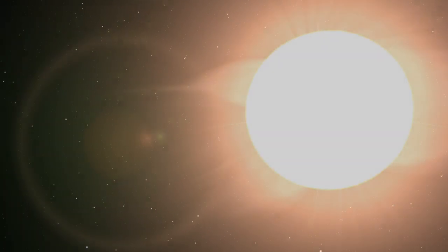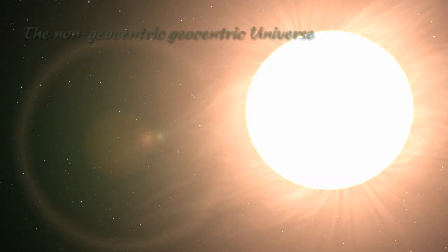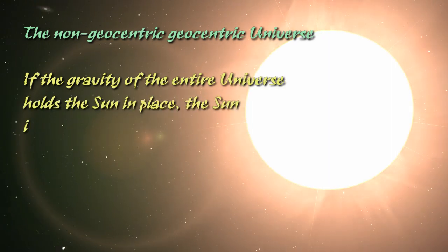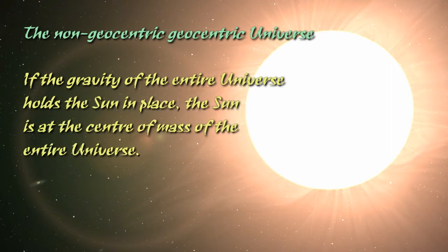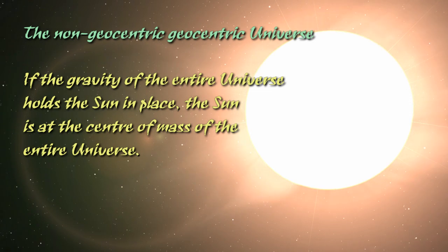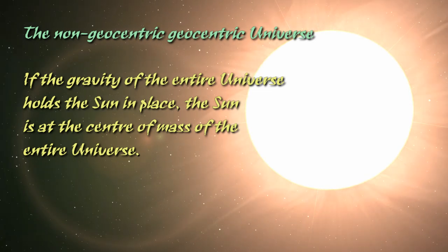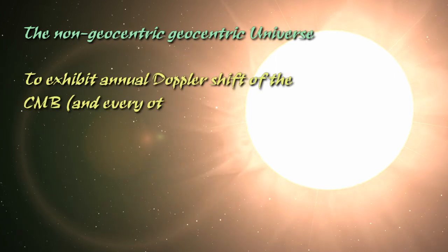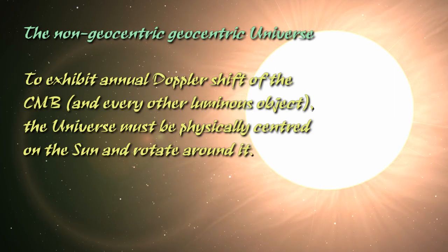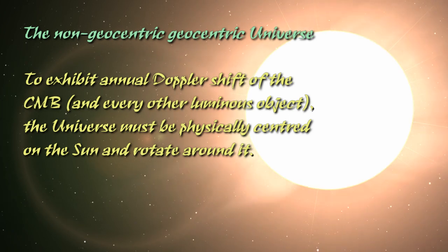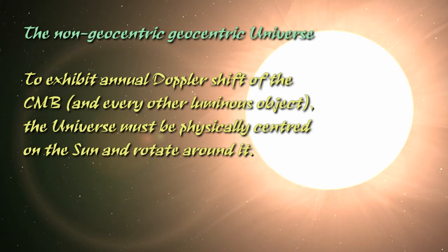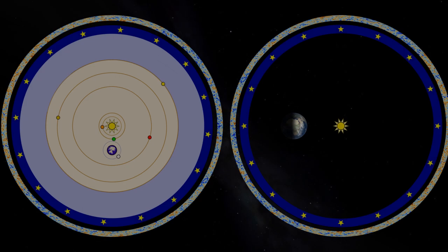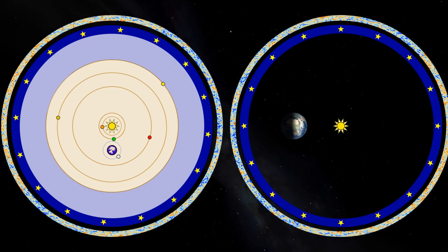Since Sungenis is claiming that the universe is spherical, that it all moves, and that the gravity of the universe holds the Sun in place, and since we know that on massive scales the universe is isotropic, then here we have confirmation that the Sun is at the centre of his universe. As we saw earlier, it has to be, in order for the CMB to exhibit an annual Doppler shift. There is apparently no limit to the stupidity of geocentrists in proposing a geocentric universe where the Sun is at its centre.